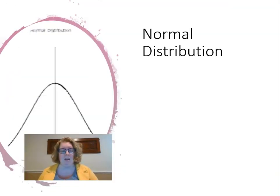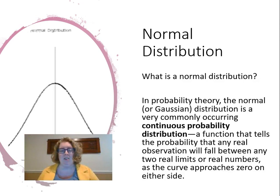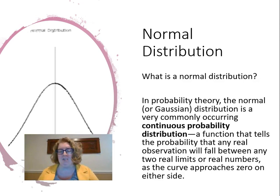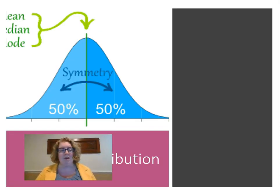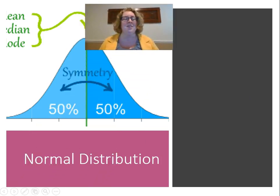Let's talk about normal distribution. In probability theory, the normal distribution is a commonly occurring continuous probability distribution — it's the function where the probability of any real observation will fall between two limits as the curve approaches zero on either side. In the normal distribution, the mean, median, and mode are equal, and there is 50% on either side — perfect symmetry.